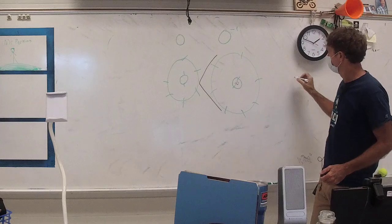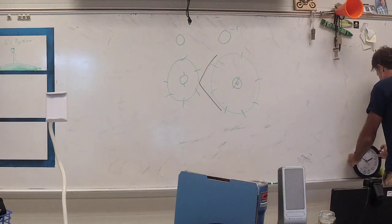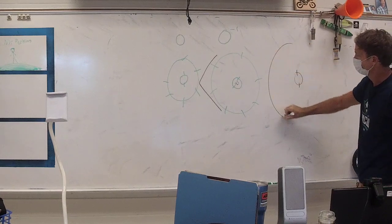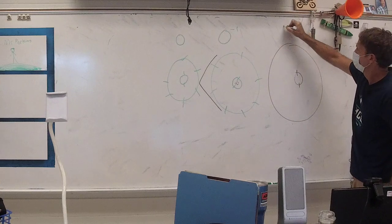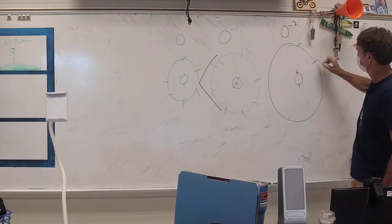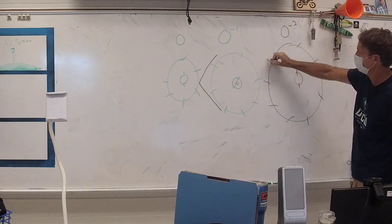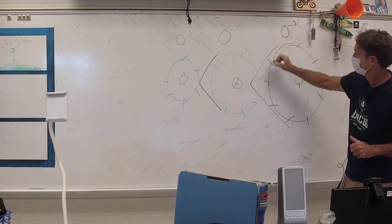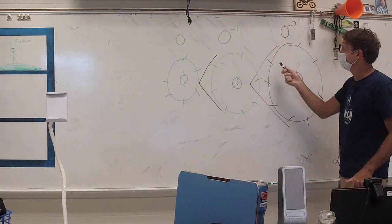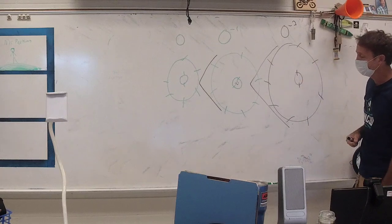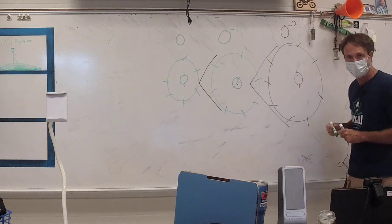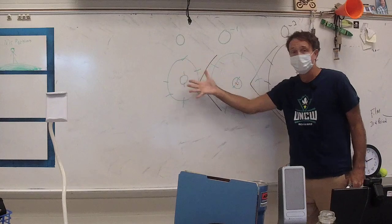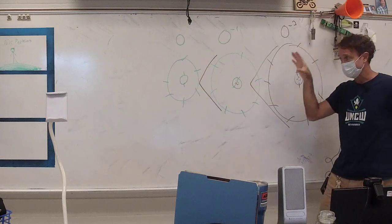What if we added another electron until oxygen was full? That would be oxygen negative two, with eight outer electrons and no more room. Oxygen negative two would even be bigger than oxygen negative one, because now it has two extra electrons and still only eight protons. So anions end up getting bigger, and cations end up getting smaller.